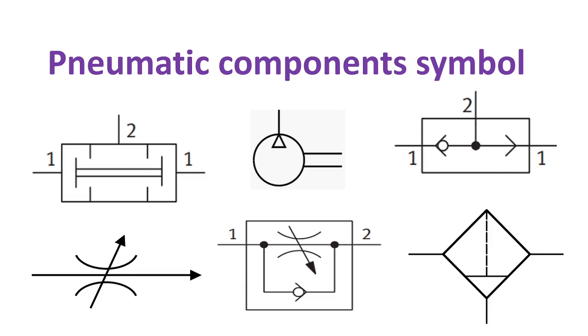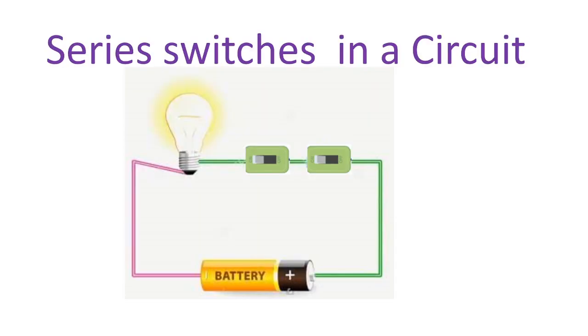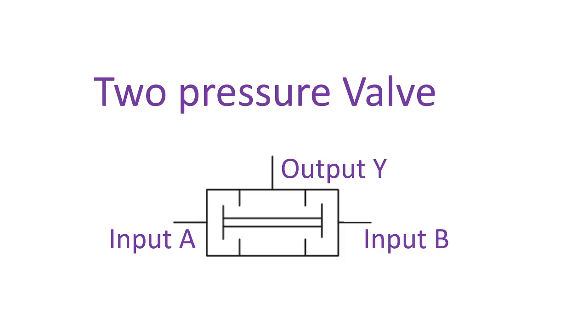Now let's proceed to our pneumatic component symbols. The two pressure valves work on the same principle with series circuit and AND gate. The output of the two pressure valves is true or high if the two pressure inputs A and B are true, otherwise it's false.